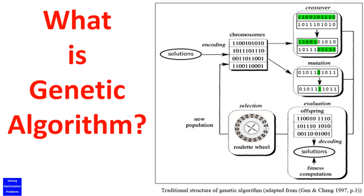Each individual in the population is called a chromosome, representing a solution to the problem at hand. The chromosomes evolve through successive iterations called generations. During each generation, the chromosomes are evaluated using some measures of fitness. To create the next generation, new chromosomes called offspring are formed by either: a) merging two chromosomes from the current generation using a crossover operator, or b) modifying a chromosome using a mutation operator.